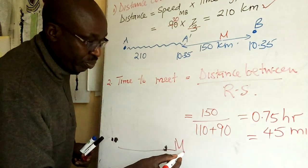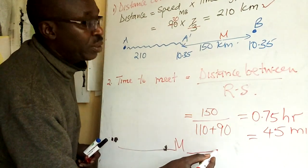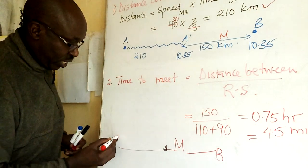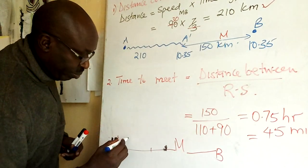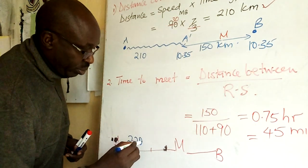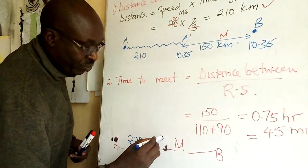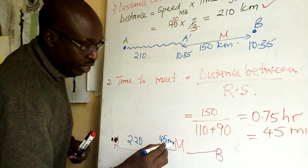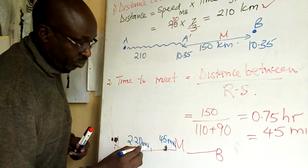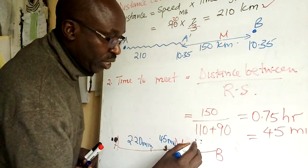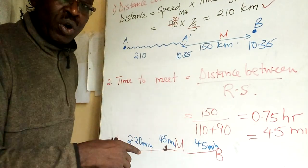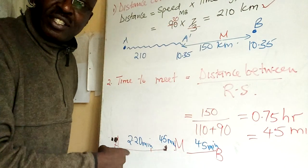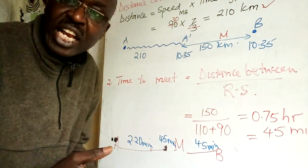This is M, this is B, and this is A. Remember here there were two portions: there is 2 hours 20 minutes and then here 45 minutes. But this one is just 45 minutes.